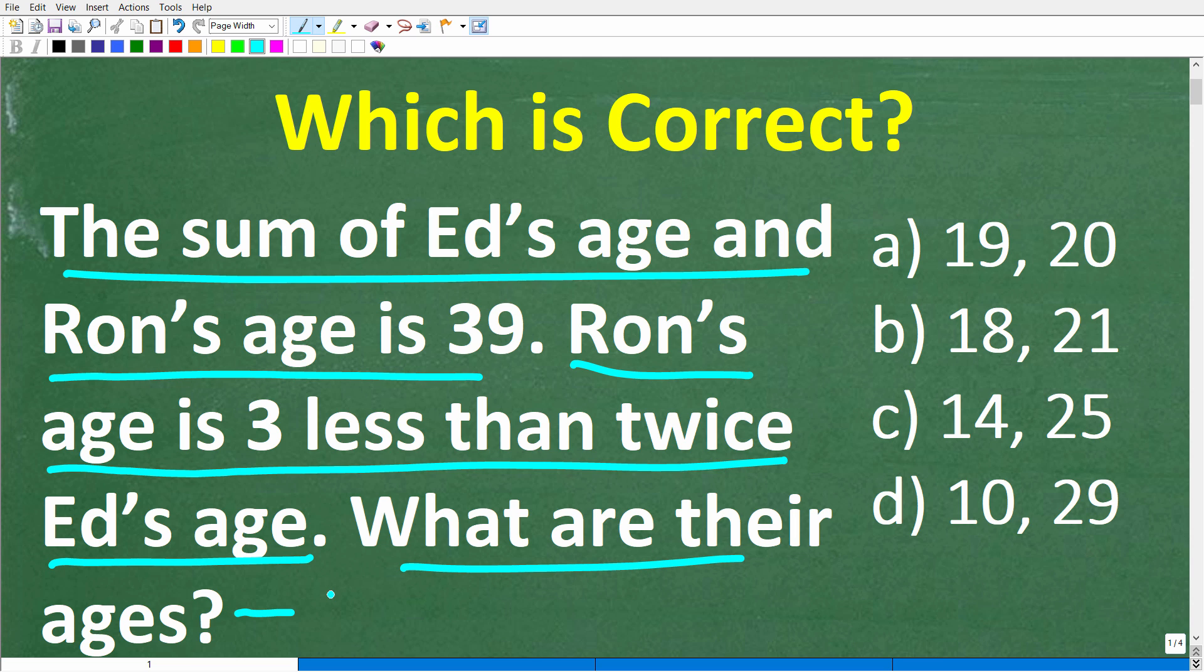Now I did indicate you will need to use a little bit of algebra here, but we have a multiple choice question as well. Let's take a look at our answers. A is 19 and 20, B is 18 and 21, C is 14 and 25, and D is 10 and 29. Feel free to use a calculator, but if you can figure this out, go ahead and put your answer in the comment section. I'll show you the correct answer in just one second, and then I'm going to explain exactly how to do this problem step by step.